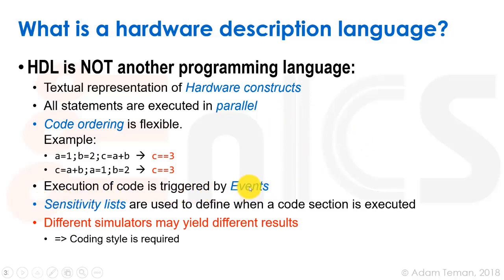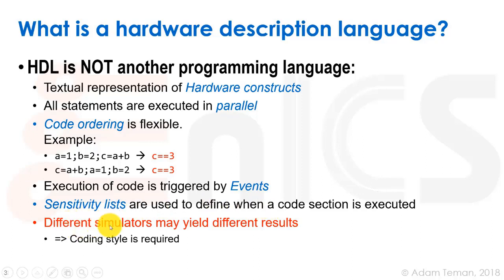Since an event causes things to happen, it sees what changed and goes to what we call a sensitivity list — a list of signals that affect a certain construct. The sensitivity list checks if one of its signals has changed, and that's when a certain code section is executed. It's important to note that because things happen in parallel, it can be unclear which happens first, causing different simulators to yield different results. This means a specific coding style is required, and what we'll learn is how to write Verilog with a coding style that will ensure our design actually works.